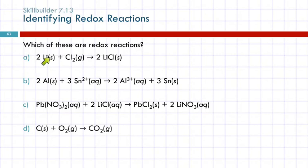Which of these are redox reactions? Well, this first one, we have lithium and chlorine. This is a metal reacting with a nonmetal. That's an oxidation-reduction reaction. Metal reacting with nonmetal.